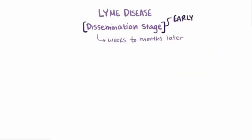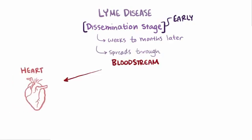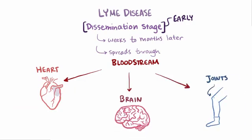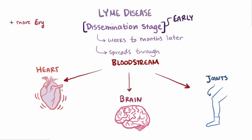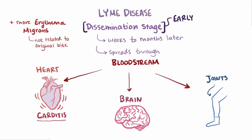Next is the early dissemination stage, usually weeks to months later, when the bacteria starts to spread through the bloodstream to places like the heart, the brain, and the joints. Relatively few bacteria actually invade these tissues, but the immune reaction is usually quite severe, essentially killing the bacteria but damaging the tissue in the process. When the bacteria infects the heart tissue, it's known as carditis, and it often clinically presents as AV heart block, meaning the electrical signal moving from the upper chambers to the lower chambers is held up or blocked, changing the timing of the heartbeat.